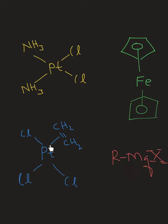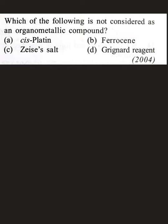So for all options, there is a metal and carbon bond, but in cisplatin there is no metal and carbon bond. Therefore option A should be your answer.